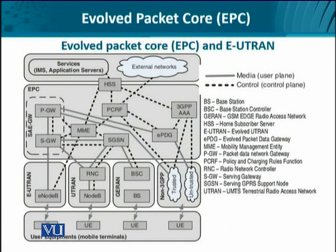Looking at the Evolved Packet Core diagram from the lower side, we have the user equipment, then terrestrial radio connectivity. Starting from the classical GERAN — GSM EDGE Radio Access Network — we have entities like the base station and base station controller. In UMTS-based RAN, we have Node B and the Radio Network Controller, which persisted only up to Release 7. Then we have the evolved UTRAN, which includes eNodeB, and the Radio Network Controller is obviated.